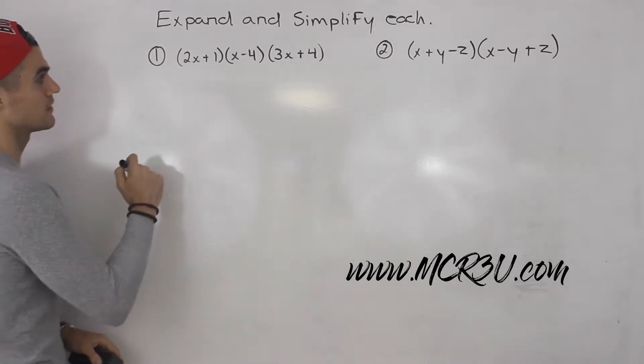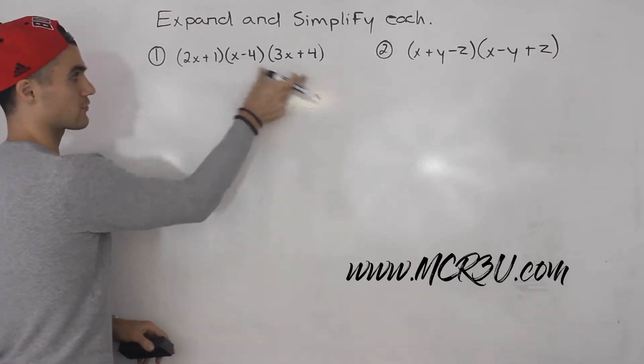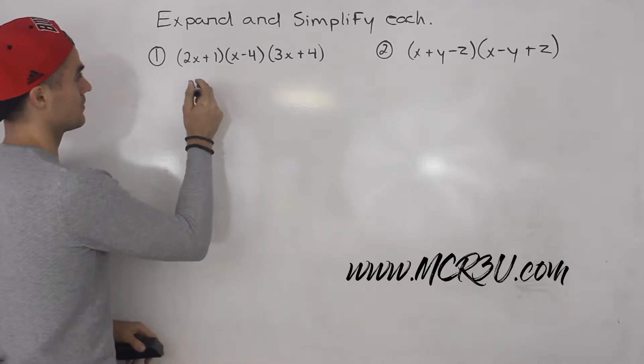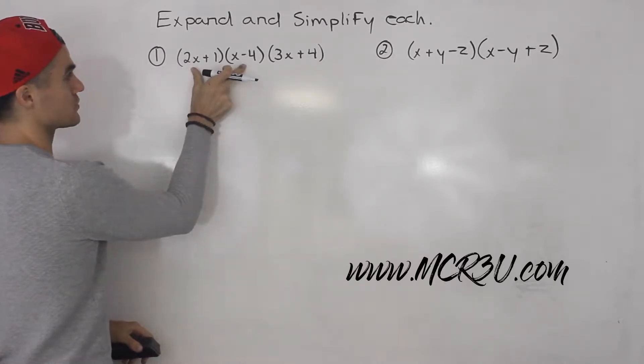So starting off with this first one, notice we're multiplying by three brackets. So what I'm going to do is I'm going to FOIL out the first two brackets.